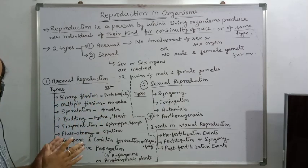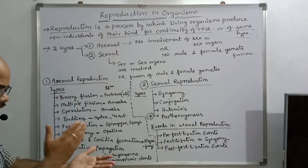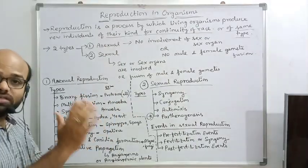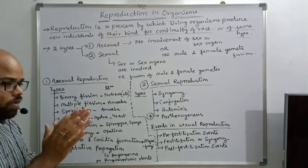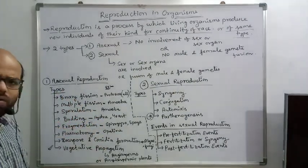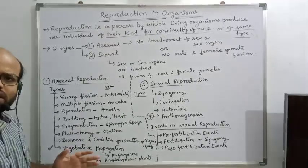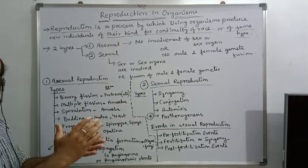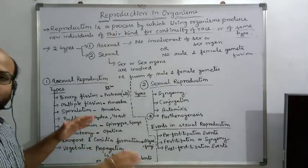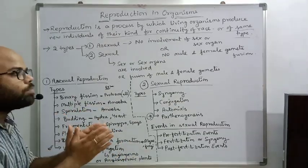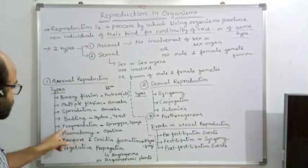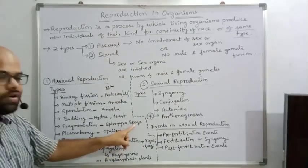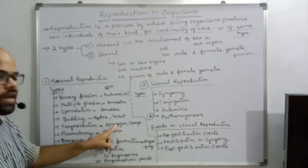Fragmentation — whether it is a higher or lower living organism, animal or plant, or any other kingdom — what happens is that small fragments of a living body each develop into a new living organism. This is called fragmentation. For example, Spirogyra (a plant in Thallophyta) and sponges (sponge animals).